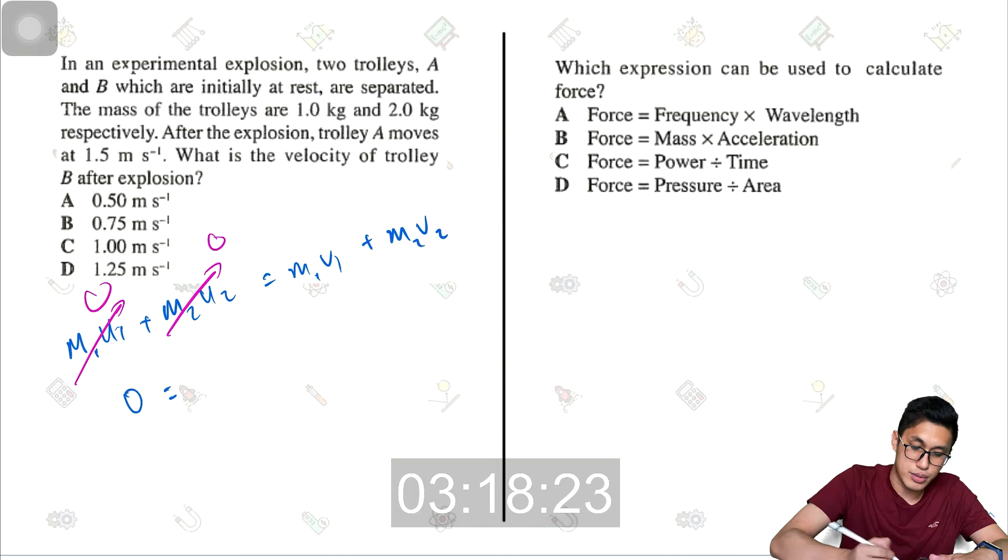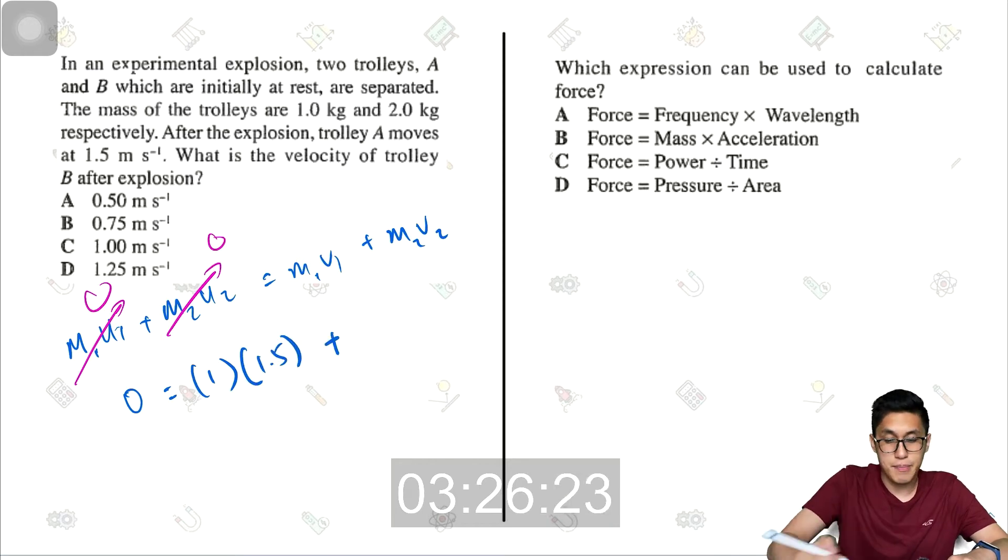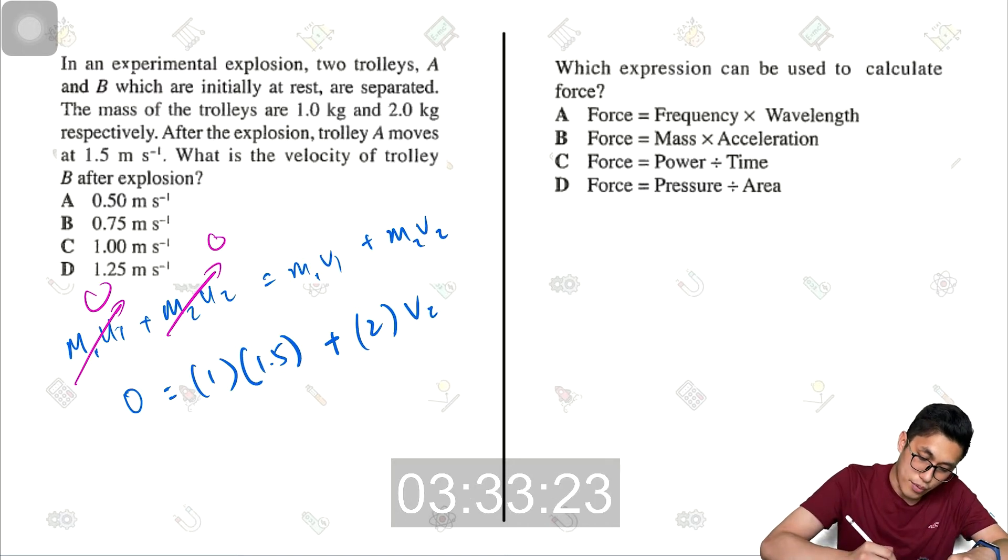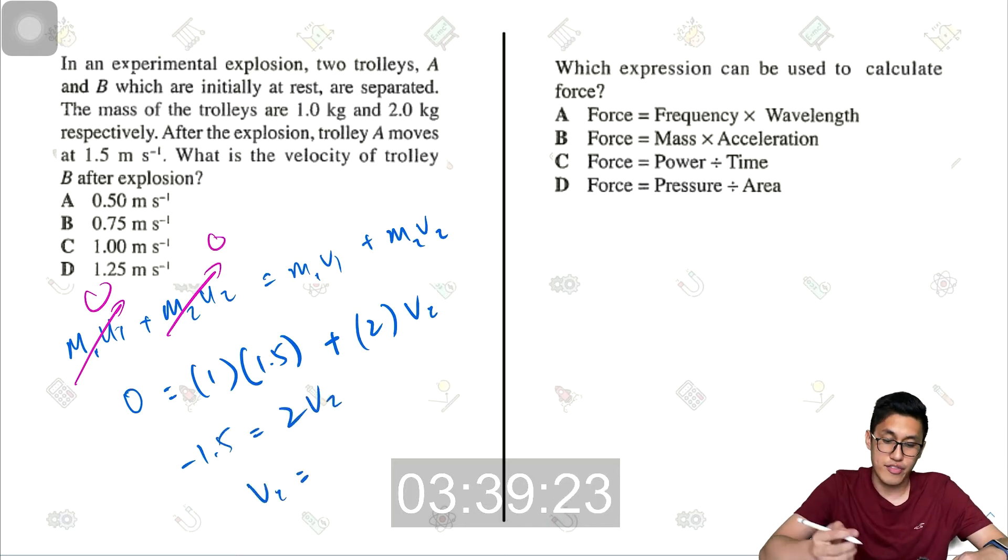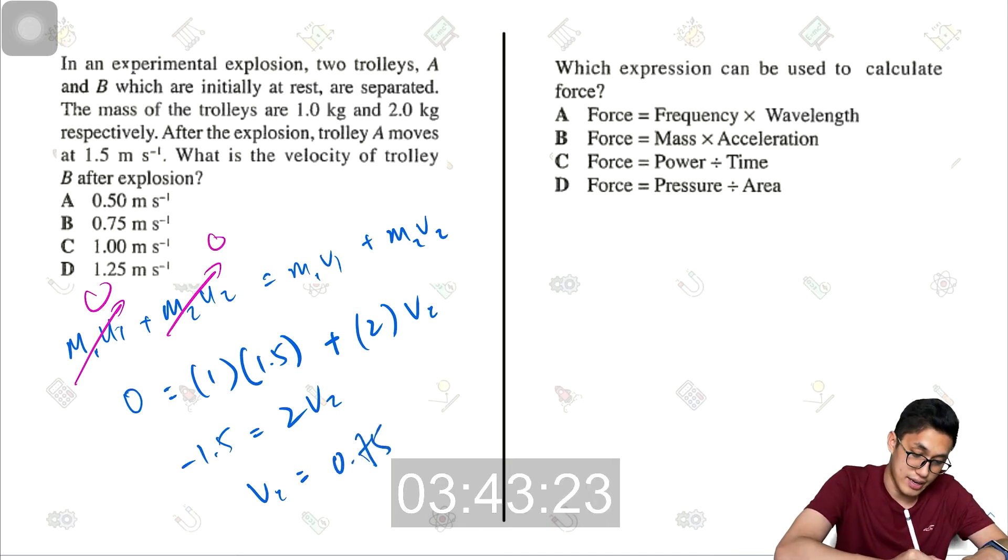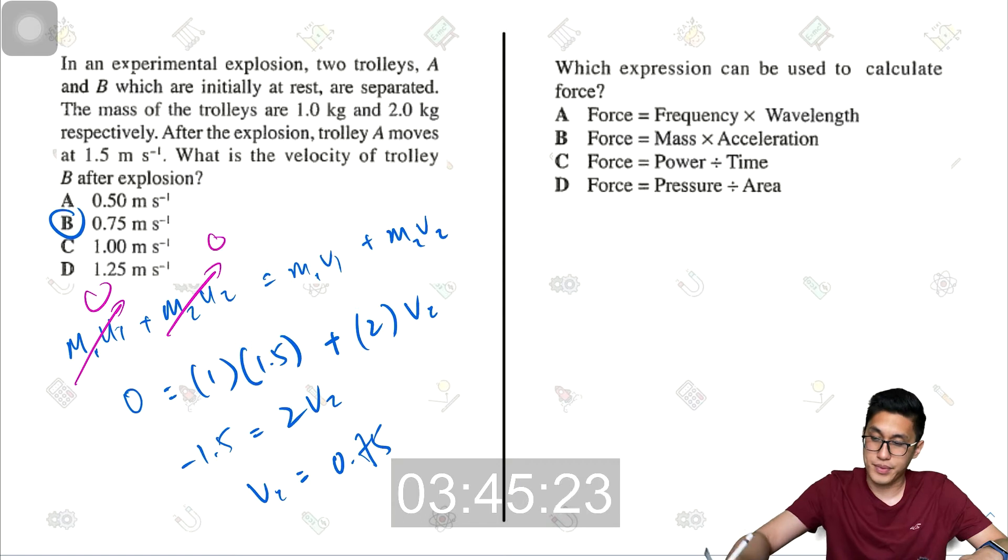So initially, both are at rest. So the initial velocities are all 0. So 0 equals mass 1, that's 1 kg multiplied by the velocity 1.5 plus mass 2, that's 2 kg and velocity of trolley B. So here, negative 1.5 will be equals to 2V2. So V2 will be equals to 1.5 divided by 2, which should be 0.75. And this should be B.